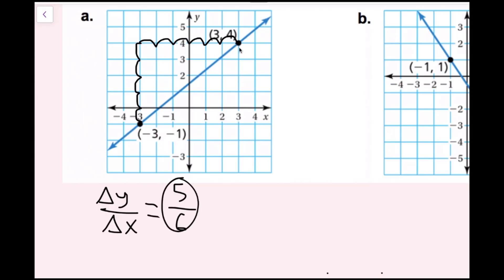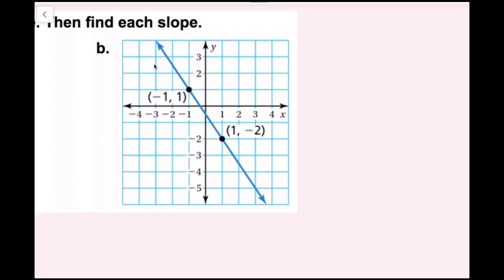You could have done it from the top point to the bottom point instead. You would get negative five over negative six, but that simplifies to five-sixths. For part b, I'll describe the slope first. As I move from left to right, my line is decreasing — the y value is decreasing — so that means I have a negative slope. To find the slope, I'm going to use the equation y2 minus y1 over x2 minus x1 rather than rise over run.